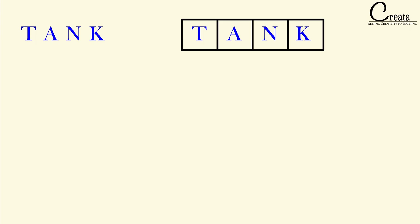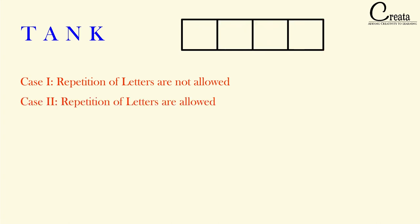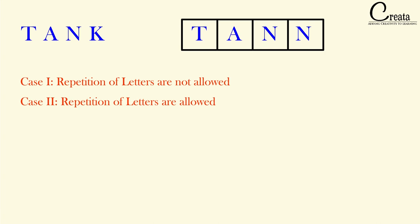Two cases can be formed. In the first case, where repetition of letters is not allowed, we cannot repeat the letter — suppose the first letter is T, then the second, third or fourth letter cannot be T; it should be either A, N or K. In the second case, where repetition is allowed, we can repeat the letter — for example, we can form the word T-T-T-T. You have to pay attention to what the question is asking: whether repetition of letters is allowed or not.